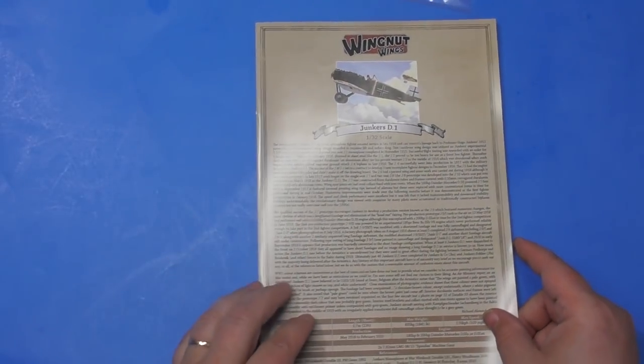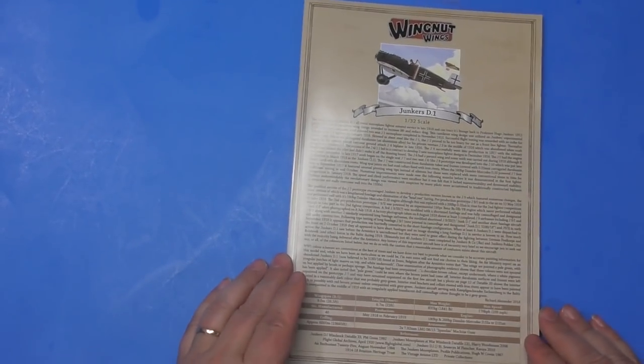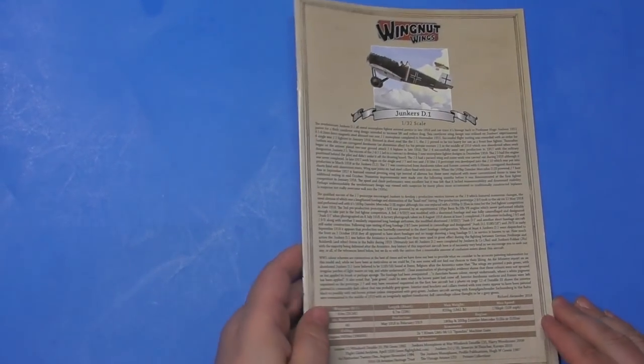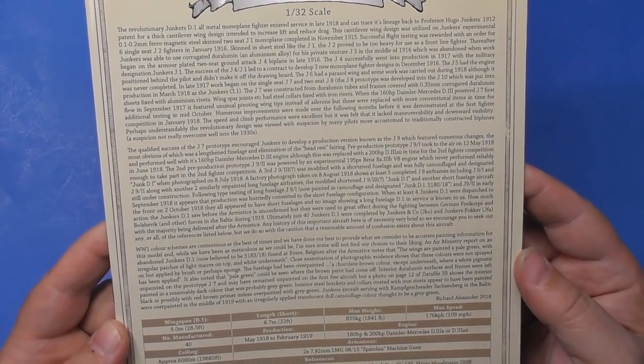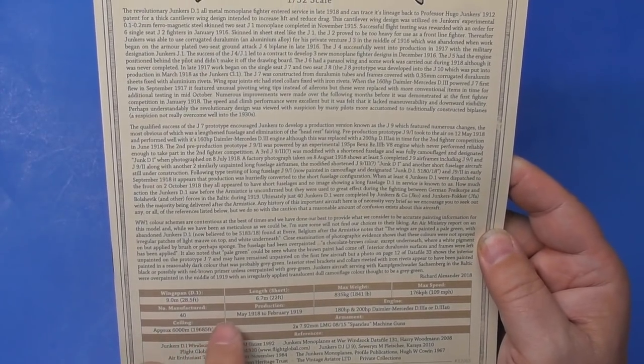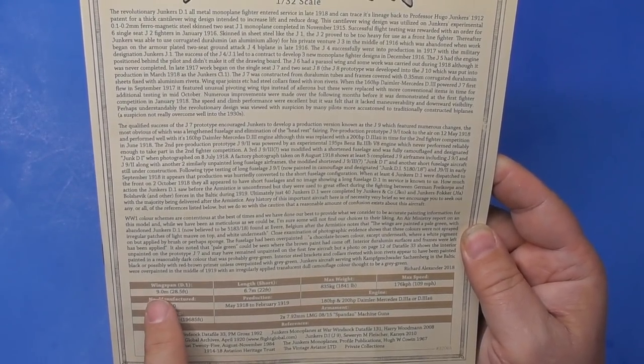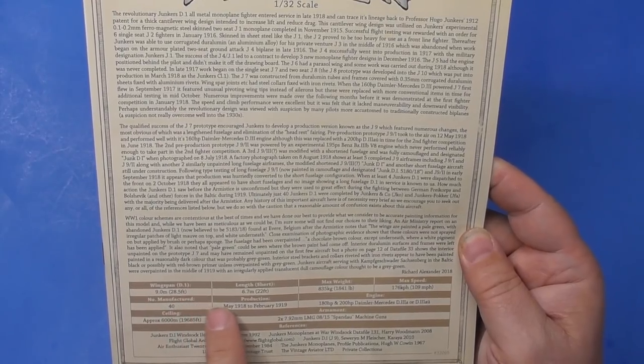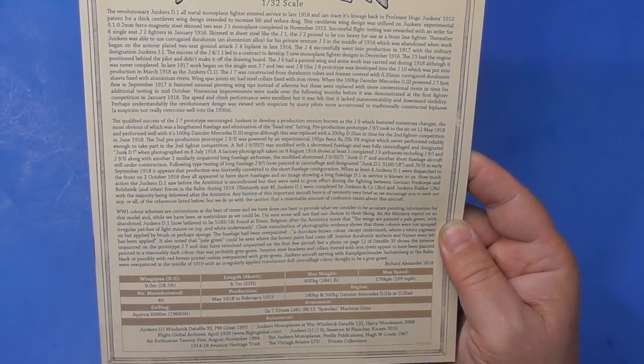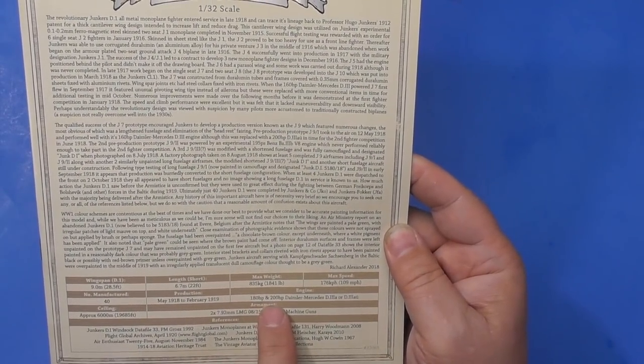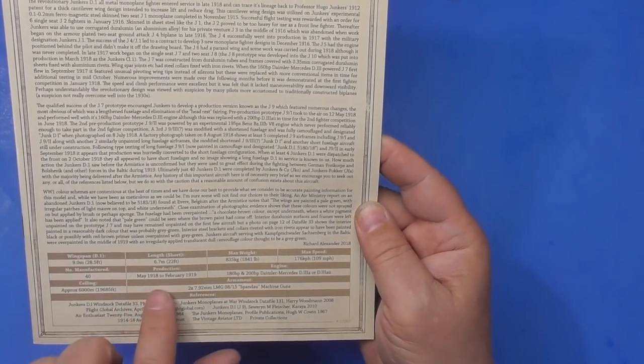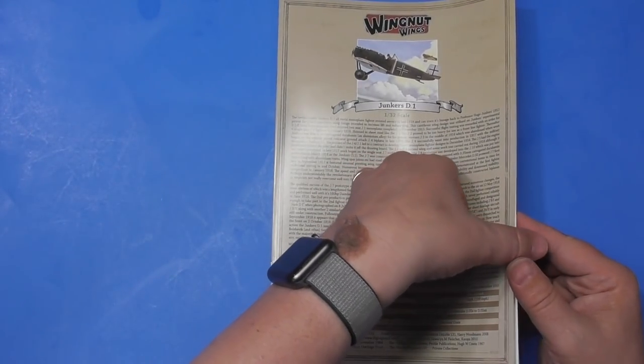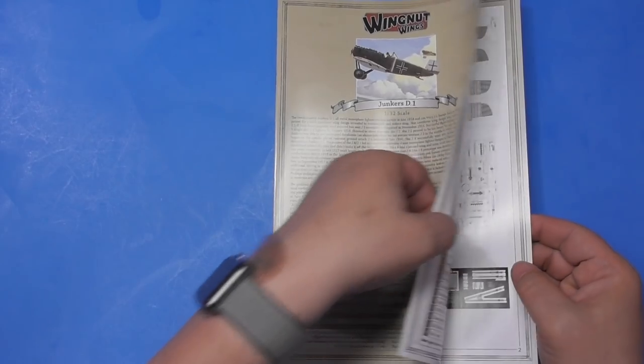One of the things they're renowned for, Wing Nut Wings, is their beautiful instructions. A little bit about the aircraft. Pause it if you want to read it. And then the actual size, nine meters, 28 feet. There's a 180 and a 200 Daimler Mercedes. So it's Daimler Mercedes, not Daimler Benz. Produced from May 1918 to February 1919. 19,000 foot ceiling.